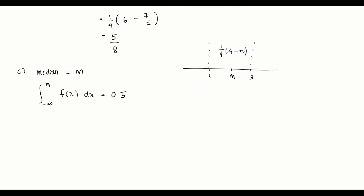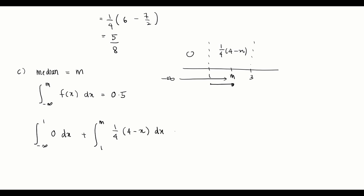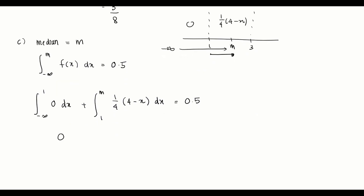Setting up the median equation: integrate from negative infinity to m, which means from negative infinity to 1 (which is 0) plus from 1 to m of (1/4)(4 - x) dx = 0.5. The first part is zero, so we only need: (1/4)(4x - x²/2) evaluated from 1 to m equals 0.5.